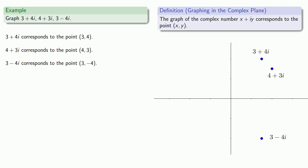And again, it's important to remember that when we graph a point, we're not associating the point with the number, but rather the distance of the point from the origin. So the number 3 plus 4i really corresponds to this distance. 4 plus 3i corresponds to this distance, and 3 minus 4i corresponds to this distance.